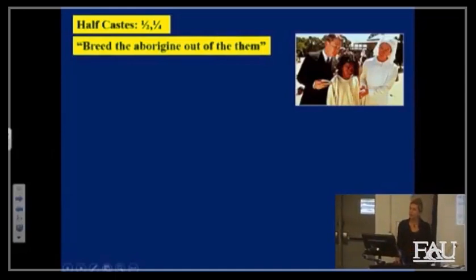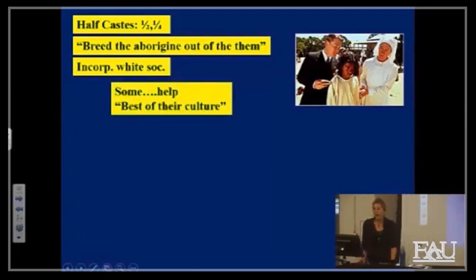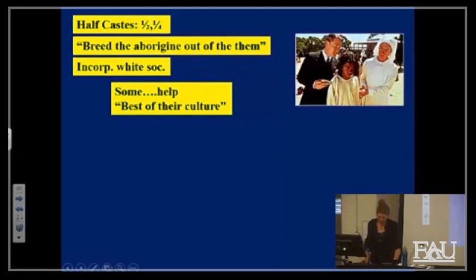The film you're seeing talks about half-castes — if you're half or a quarter Aborigine. One of the ideas was to breed the Aborigine out of them, to make sure they would look like Europeans. Some said they just wanted to incorporate them into white society — basically brainwashing children to take on a whole new culture and lifestyle. It's colonization at its worst and most disgusting.